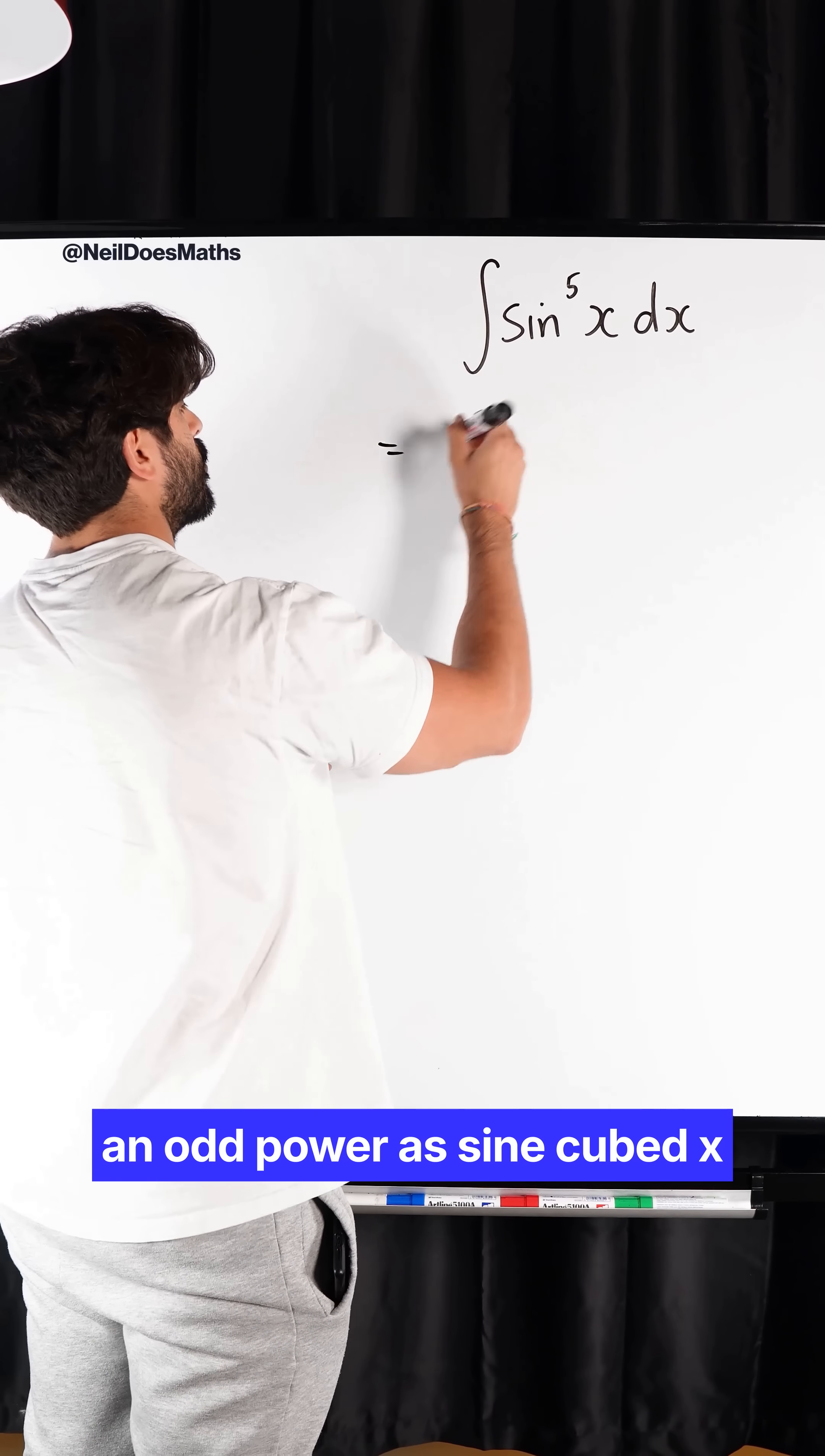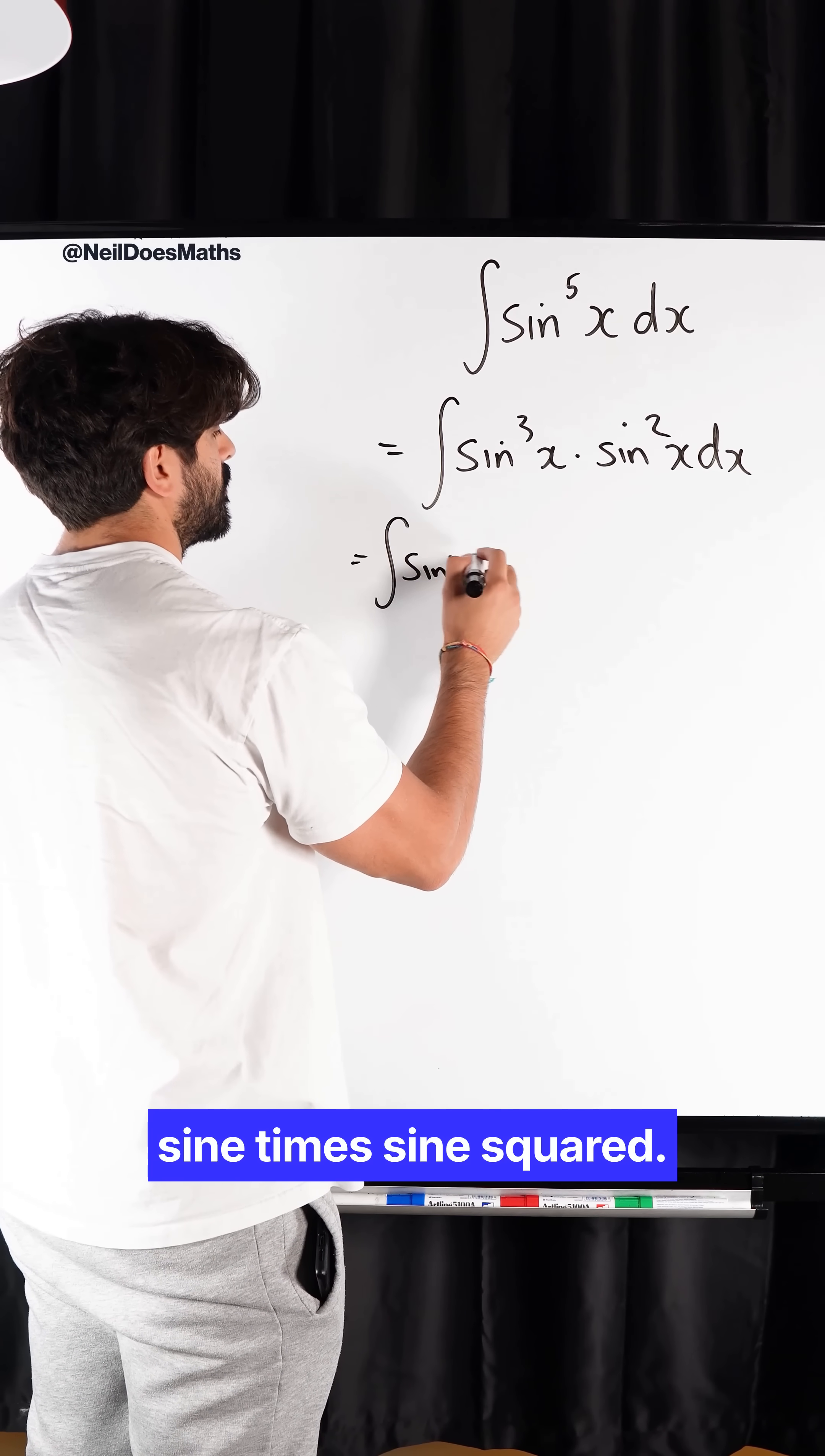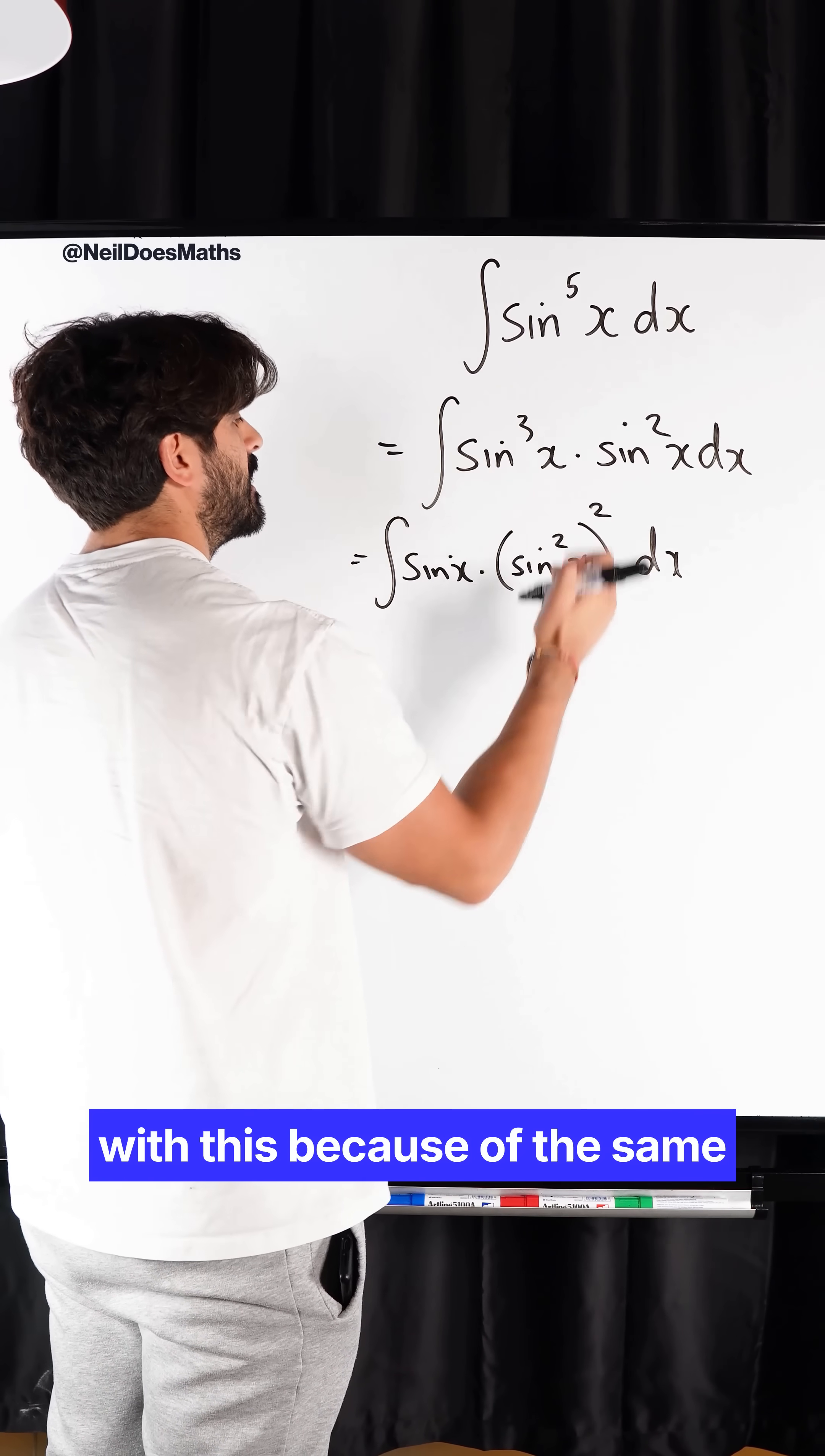I can just rewrite this with an odd power as sin cubed x times sin squared x dx. You always manipulate the odd power. I'm going to rewrite this as sin times sin squared. But then sin squared times sin squared is another sin squared x squared. So this is sin times sin squared, which together with this because they're the same is now squared.